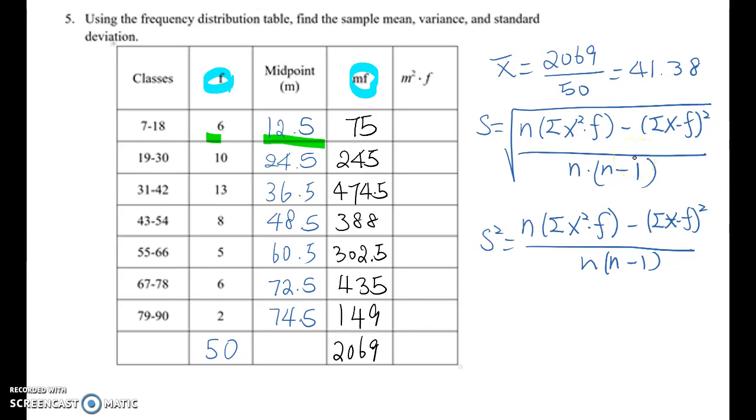So anyway, we need to find m-squared times f on third column first before finding the variance and the standard deviation.